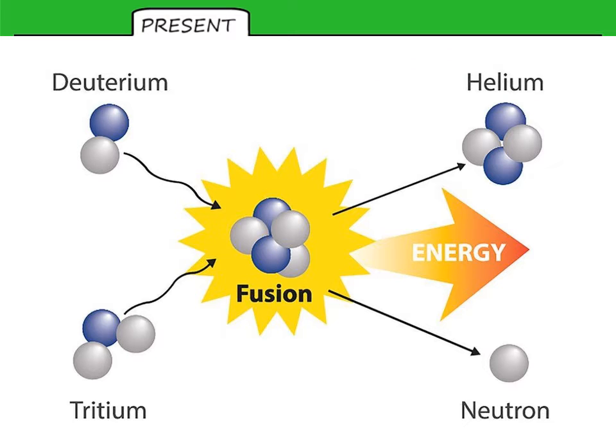So in this example, we take two isotopes of the lightest element, hydrogen. So this is deuterium on the left, with one proton and one neutron. And tritium, which has one proton and two neutrons. Fusing together, get some helium and energy is released and a neutron. Easy peasy?